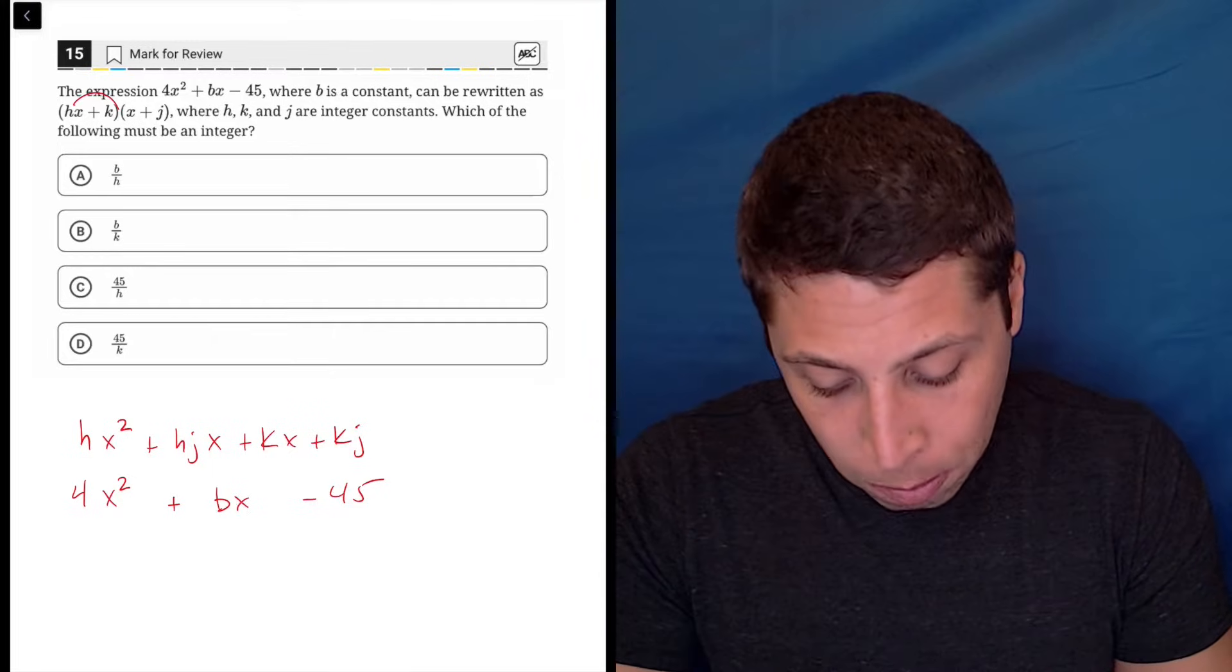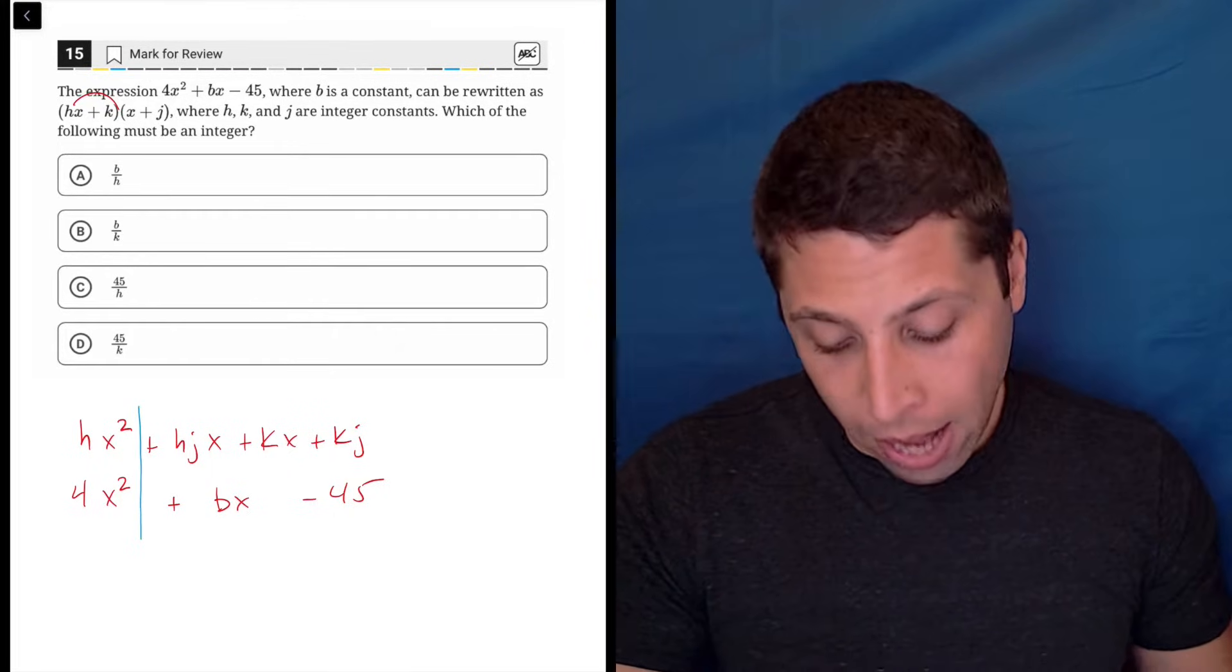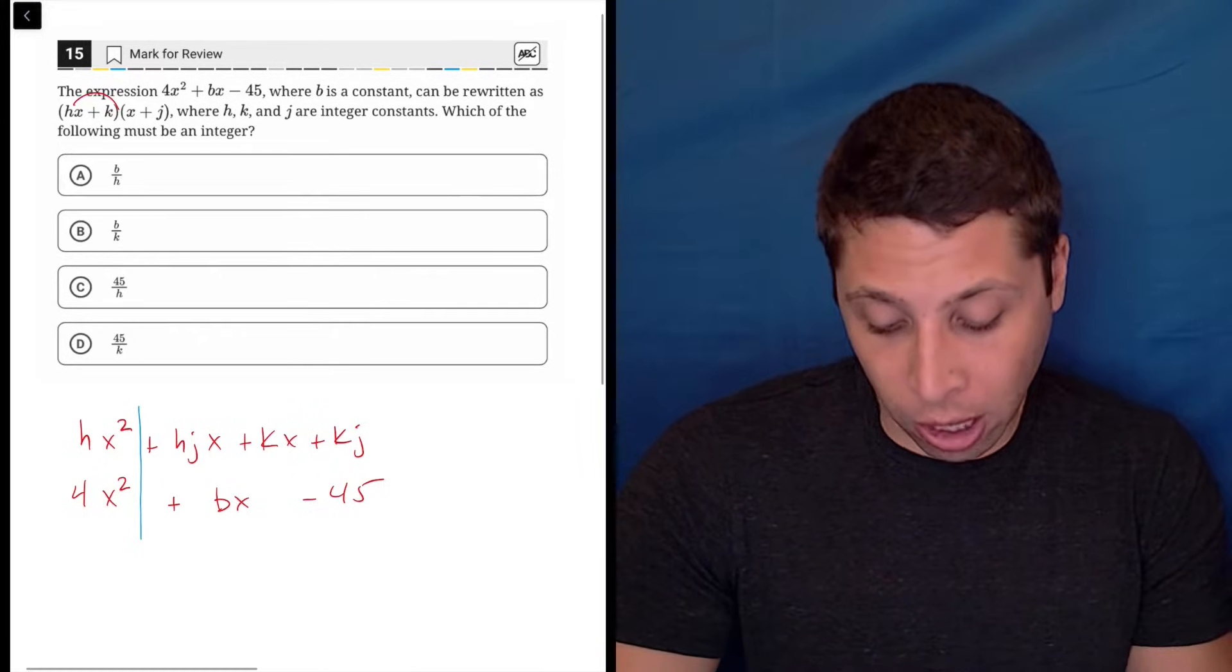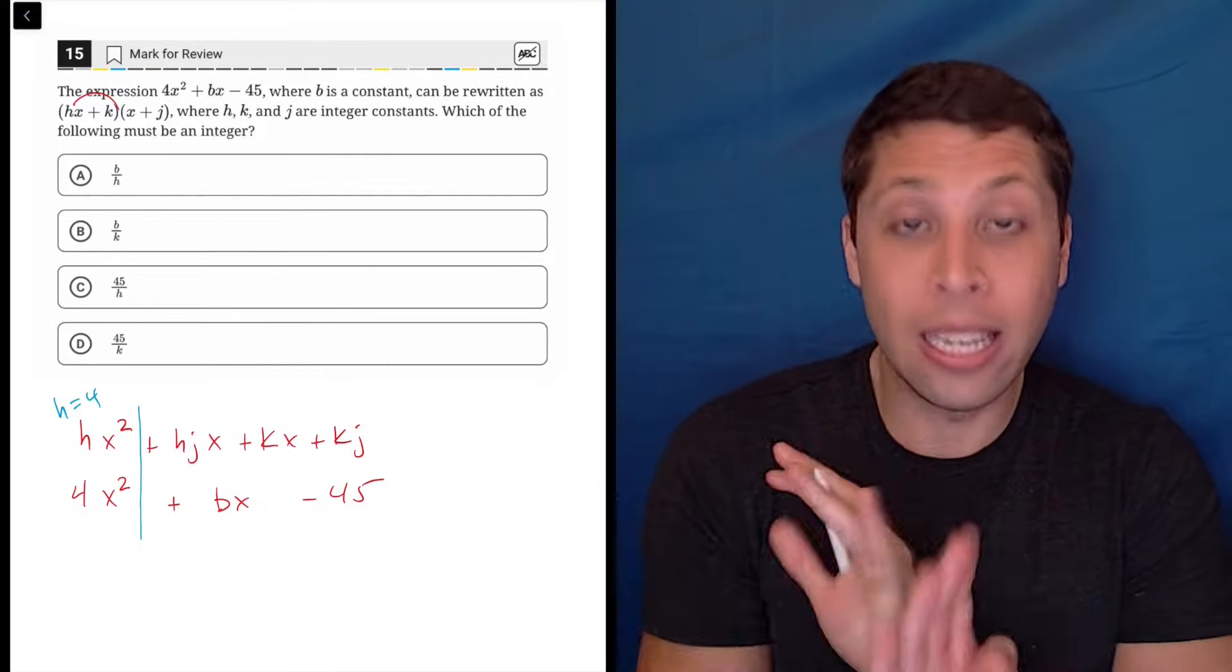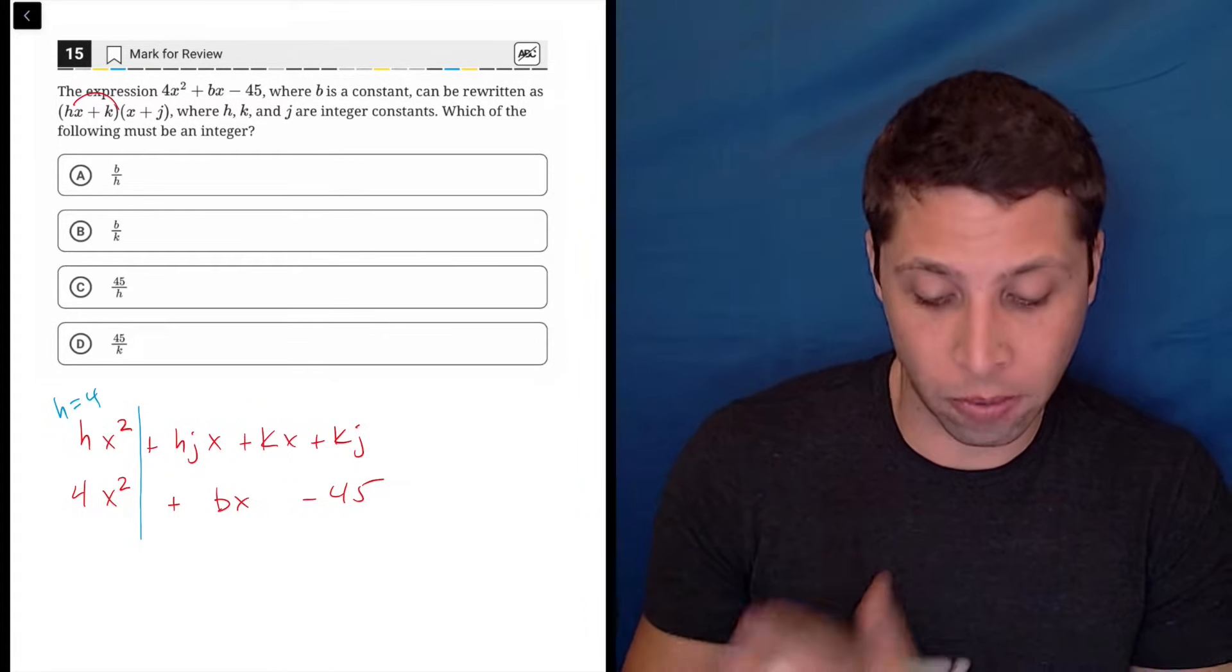Notice I'm kind of segmenting it a bit. We have the x² pieces, those are going to go together. And so, just by logic here, we now know that h is equal to 4. That is indisputable. The only way for this to work is if h is 4.